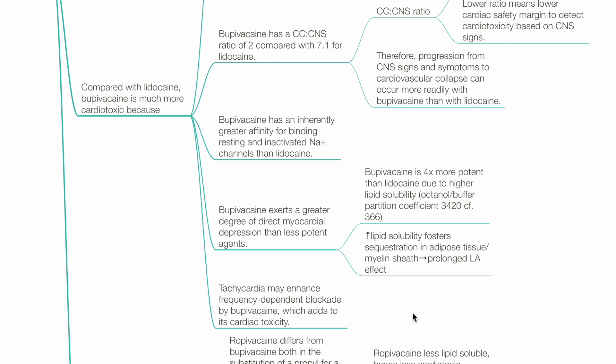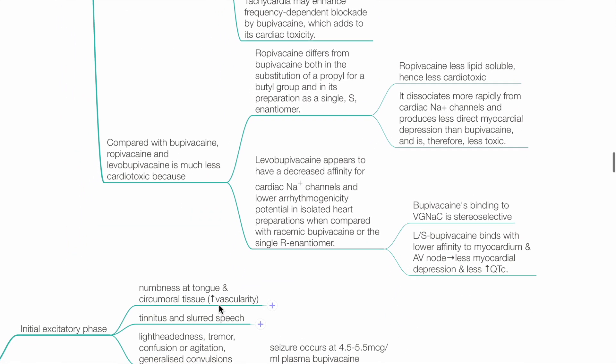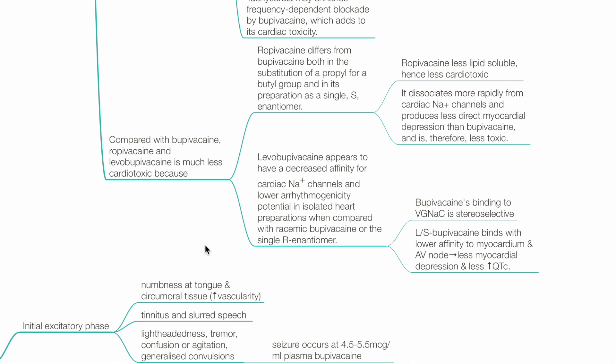Bupivacaine exerts a greater degree of direct myocardial depression than less potent agents. It is 4 times more potent than lidocaine due to higher lipid solubility. Tachycardia may enhance frequency-dependent blockade by bupivacaine, which adds to its cardiac toxicity.